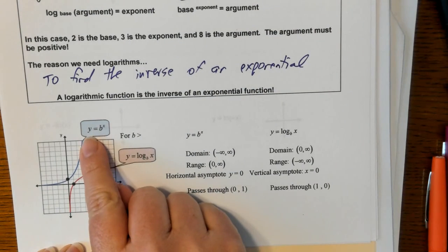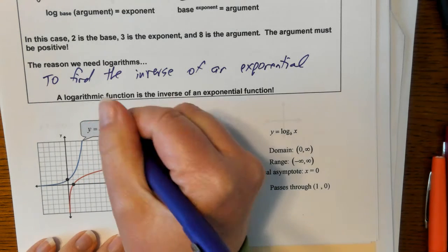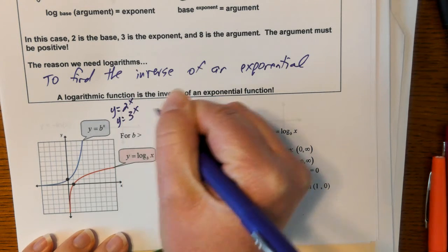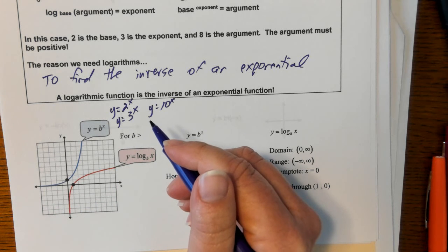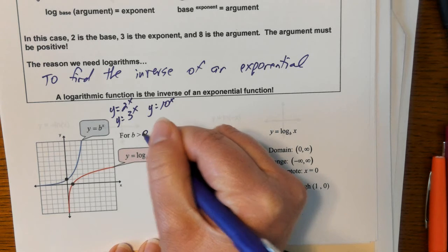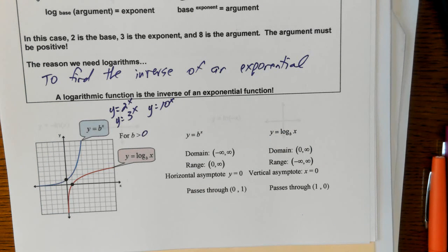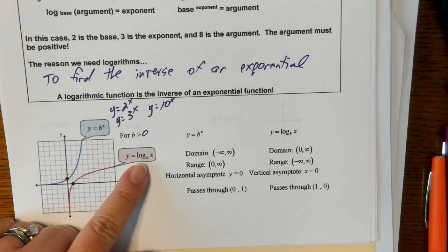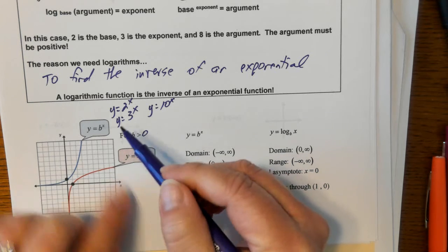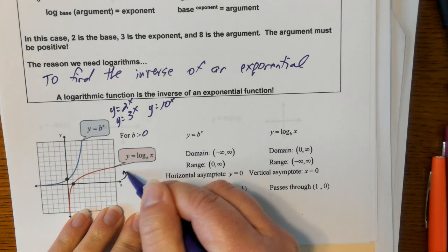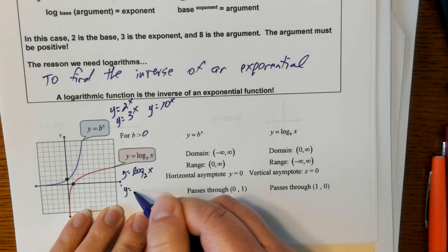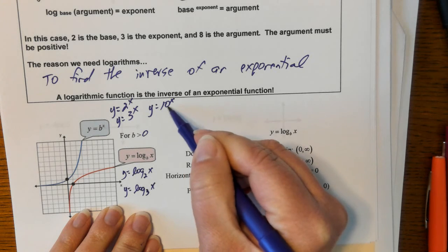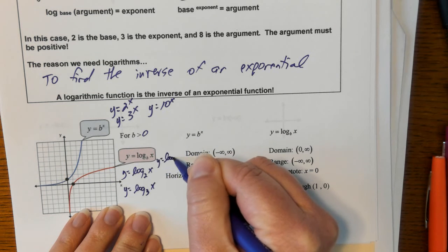A little bit more about the functions. If our original function is y = b^x — where b could be any base number, like y = 2^x, y = 3^x, or y = 10^x — keep in mind your base number must be greater than 0 and cannot equal 1. The inverse is a log written as log base b of x. So if your exponential was y = 2^x, the inverse would be y = log base 2 of x. If your original was y = 3^x, the inverse is y = log base 3 of x. If your original was y = 10^x, the inverse is y = log base 10 of x.